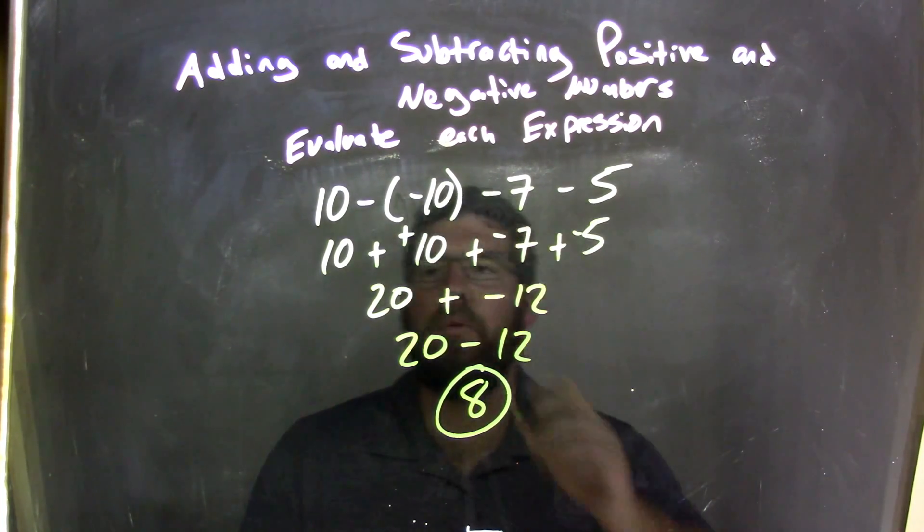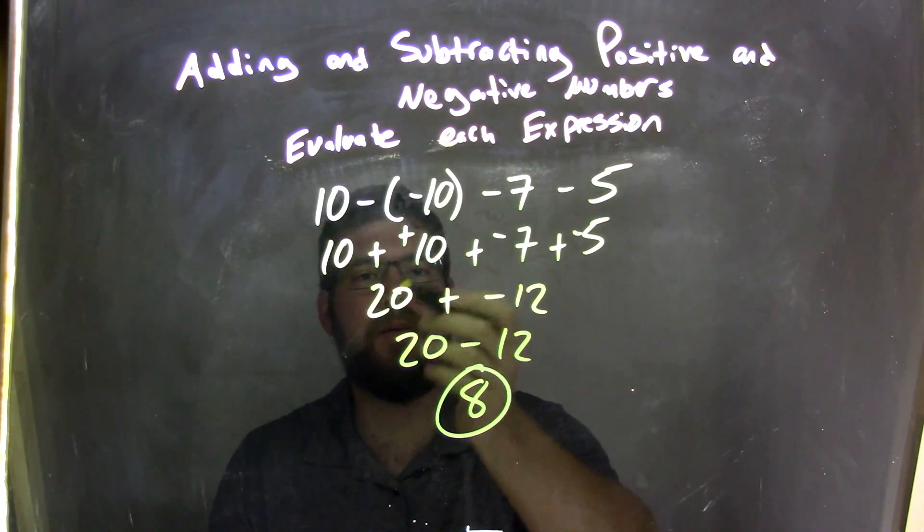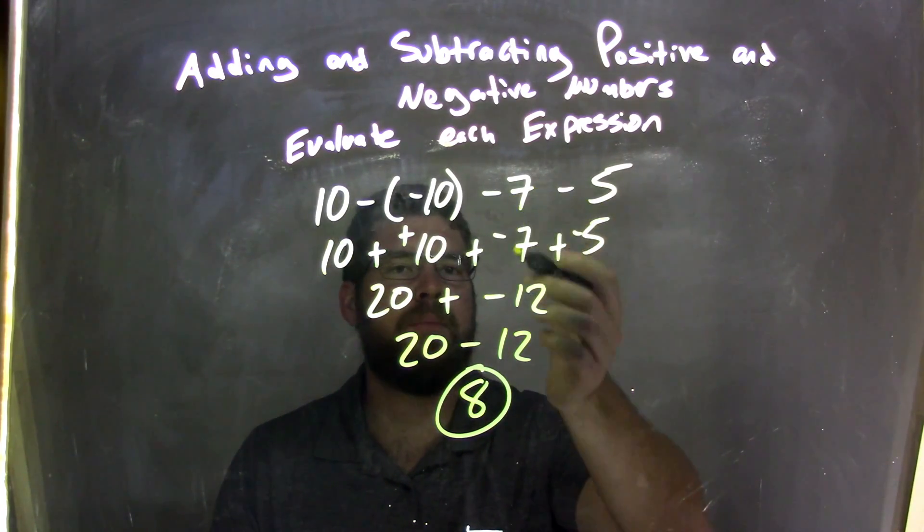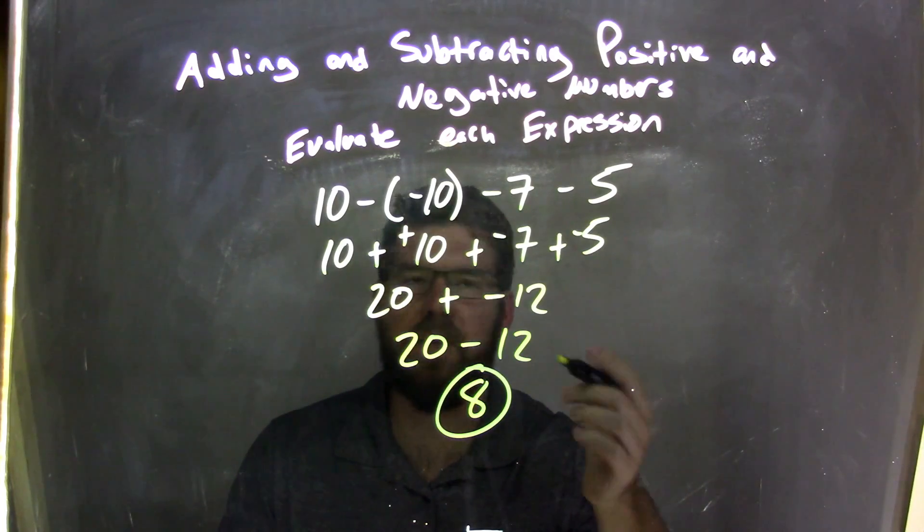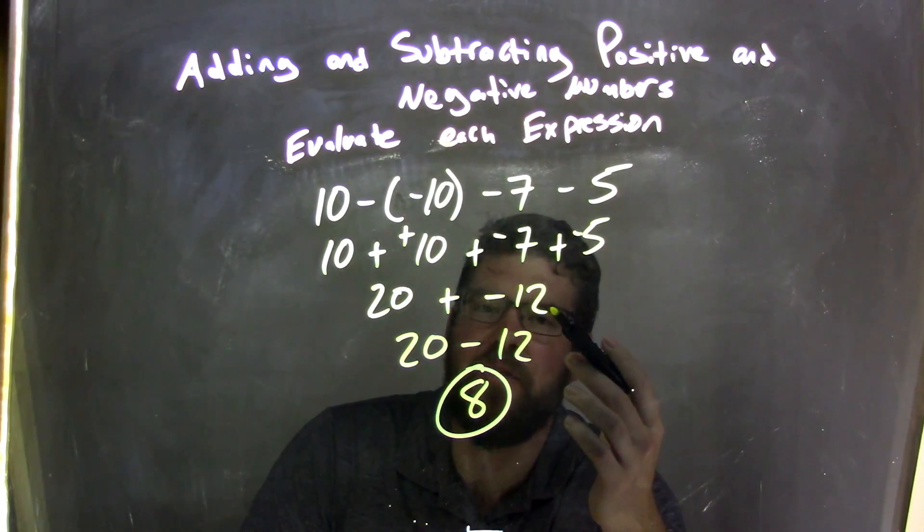So let's recap. We have 10 minus a negative 10. I'm saying the same thing as 10 plus a positive 10, which is 20. I made my minus 7 minus 5 to be plus a negative, plus a negative, all addition here. Now we have negative 7 plus a negative 5, which is negative 12.